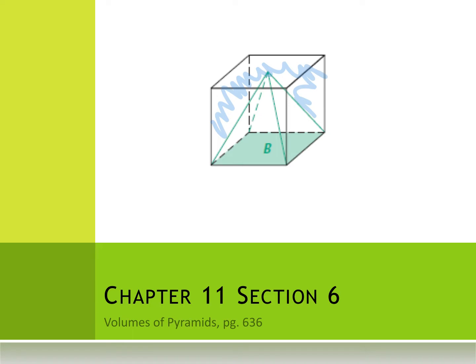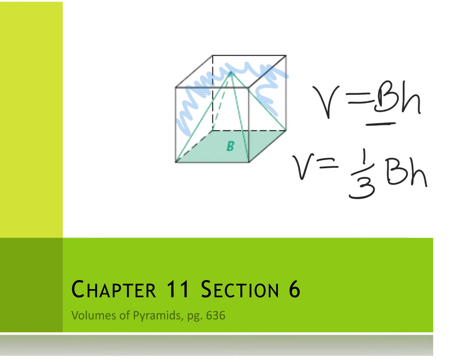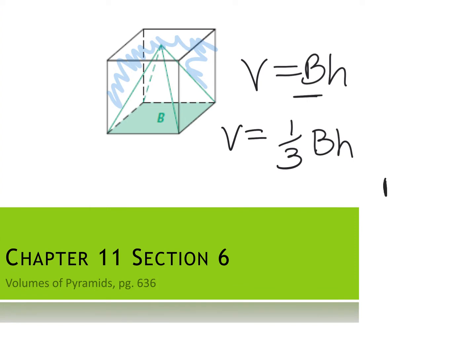Yesterday we saw the volume of a prism is capital B times H, where capital B is the area of the base shape. For a pyramid — in this case a square pyramid — we take the same formula and multiply it by one-third, or divide by three. Either way, it's the same formula; you're just multiplying by one-third or dividing by three when it's a pyramid.